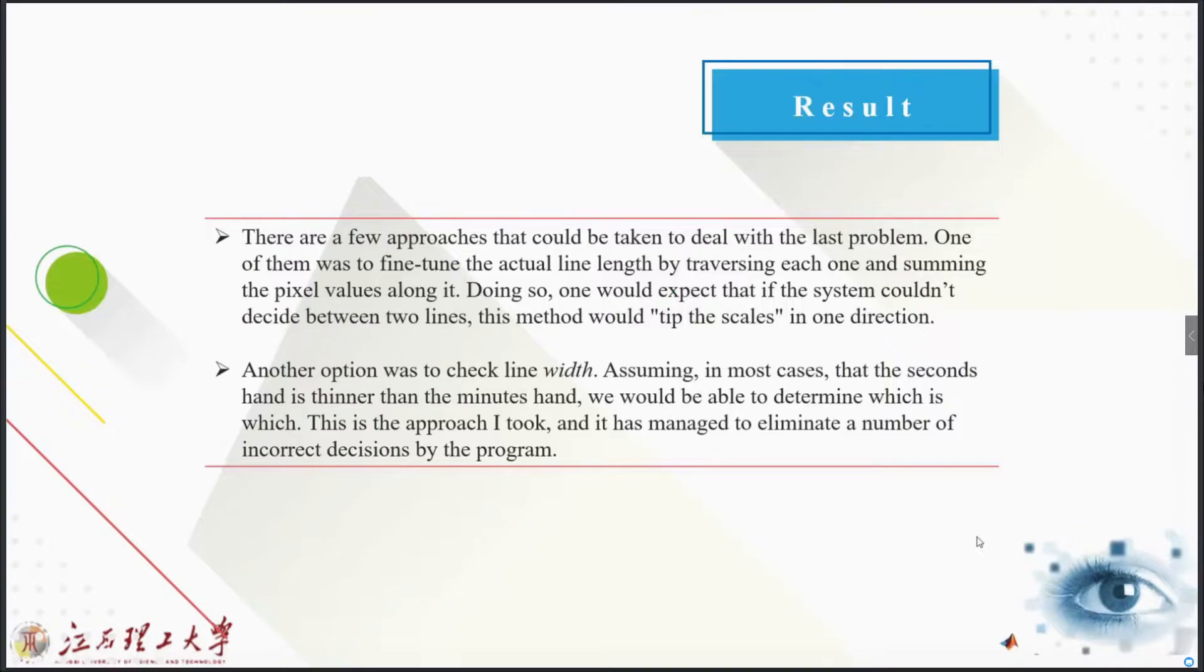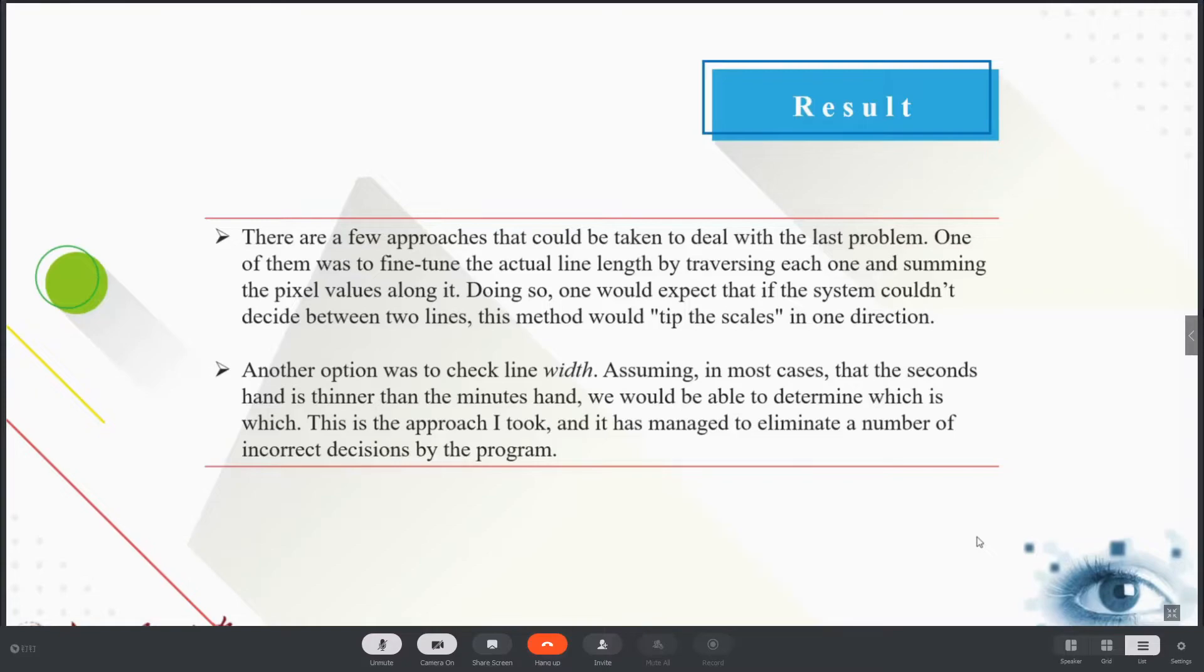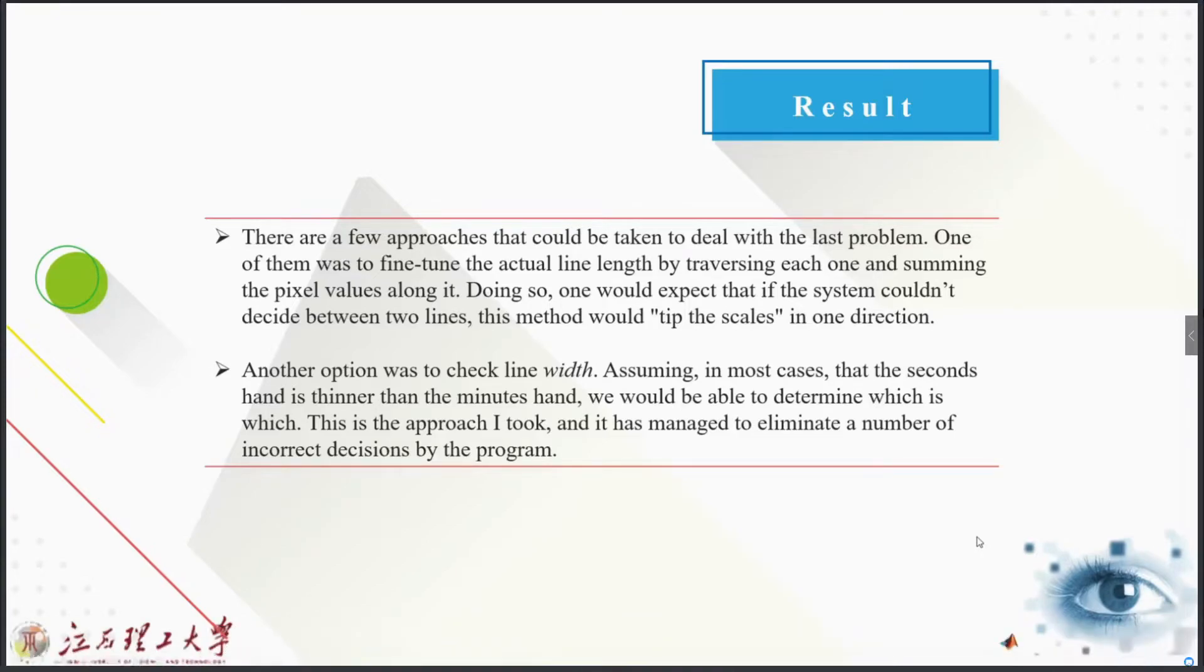Another option was to check the line width. Assuming in most cases the second hand is thinner than the minute hand, we could be able to determine which is which. That is the approach I took and it has managed to eliminate a number of incorrect decisions by the program.